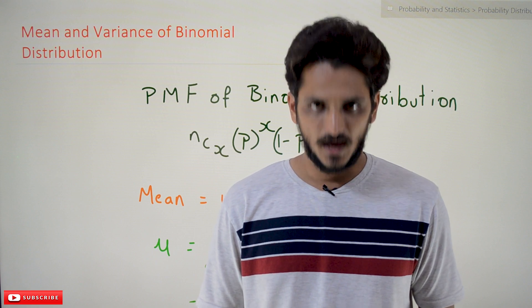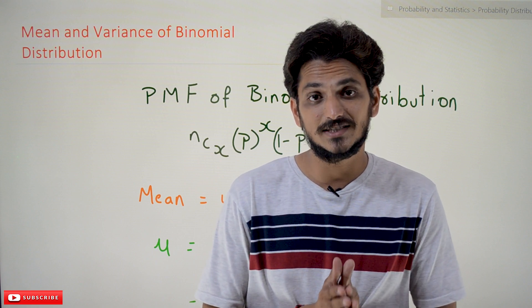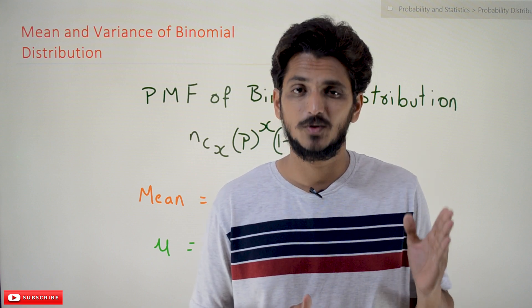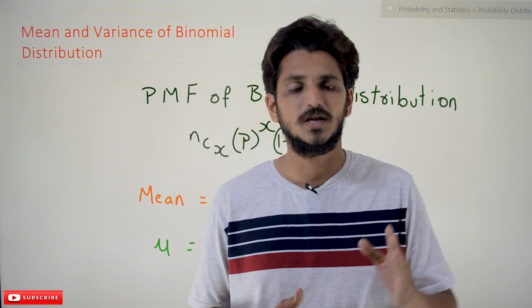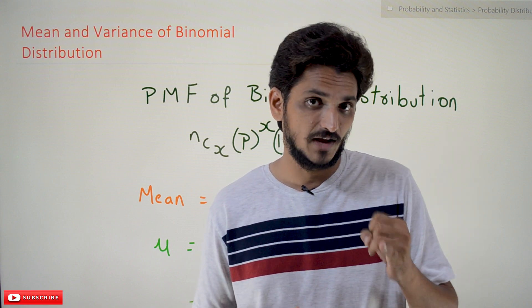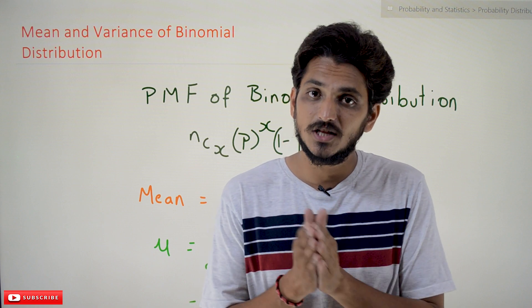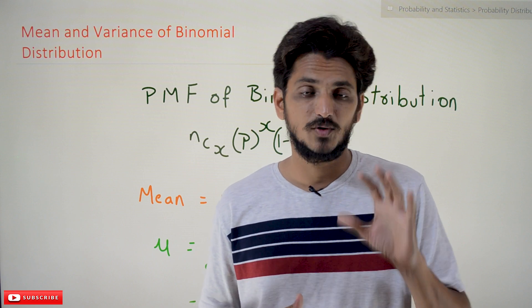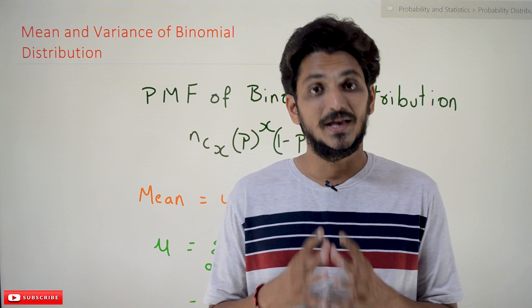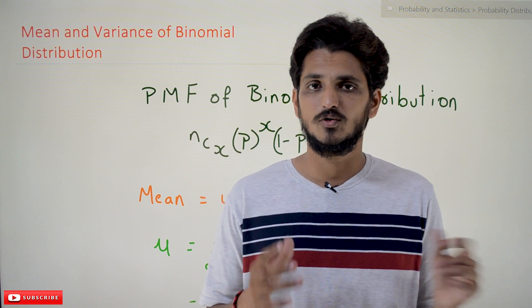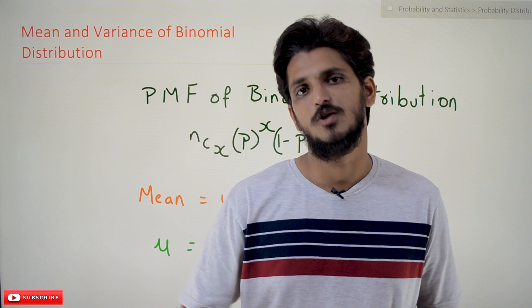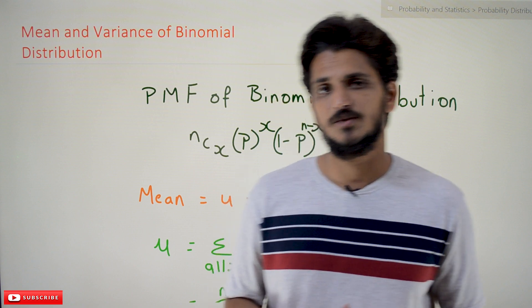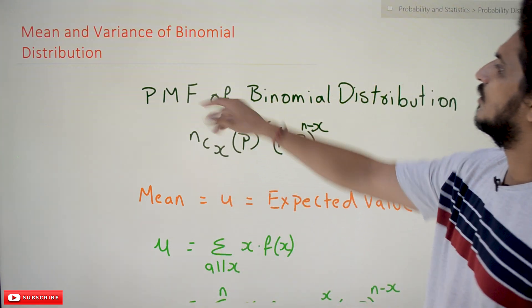Hi, welcome to Learning Monkey. I am Raghu. In this class we will discuss the mean and variance of a binomial distribution. In previous classes we clearly discussed the probability mass function of binomial distribution, expected value, and variance of discrete probability distributions. Based on the assumption that you have that basic understanding, we are going to explain the concept. Please watch our previous classes — the link for the playlist is provided in the description below.